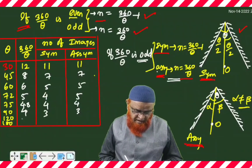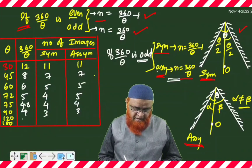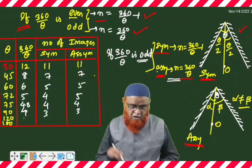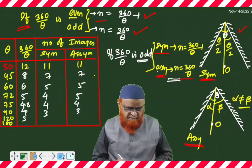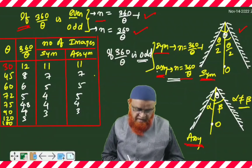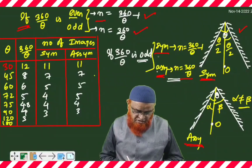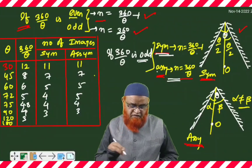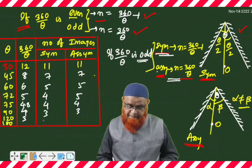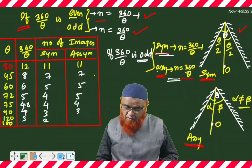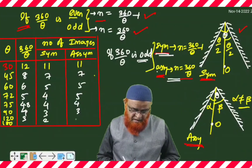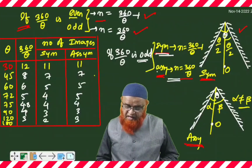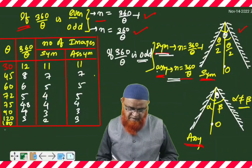For 120 degrees, 360 divided by 120 gives 3, which is the second odd case. If it is the symmetry case, you apply (360/θ) − 1, getting 1 less, which gives 2 images. If it is the asymmetry case, you get 3 images.